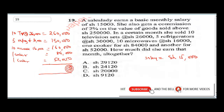Now let's sum up her total sales: 260,000 plus 150,000 plus 160,000 plus 84,000 plus 52,000. Adding these up gives us 706,000. This is her total sales. Since 706,000 is greater than 250,000, we calculate 2% commission on 706,000.